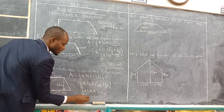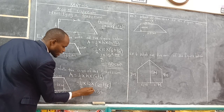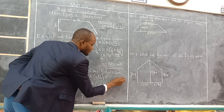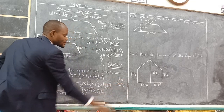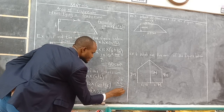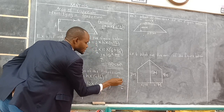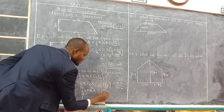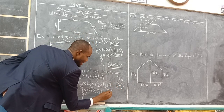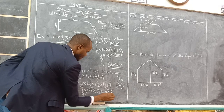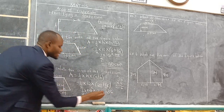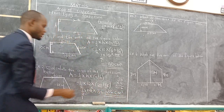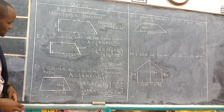So we have half times 12 times (20 plus 16). 20 plus 16 gives 36. 36 divided by 2 gives 18 — wait, 12 divided by 2 gives 6, and 6 times 36 gives 216. The answer becomes 216 centimeters squared. That is the area of that trapezium.